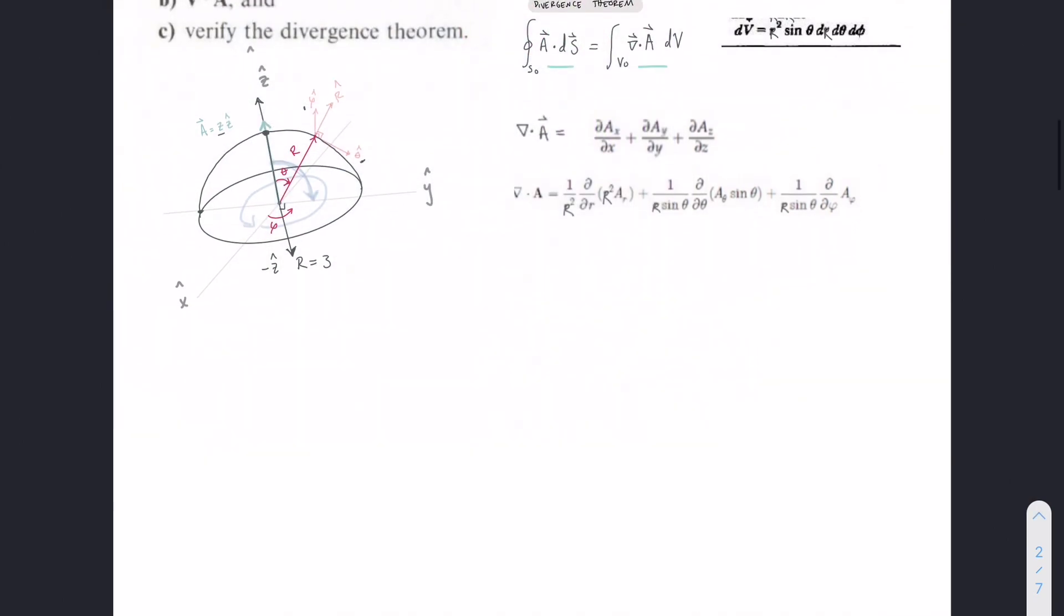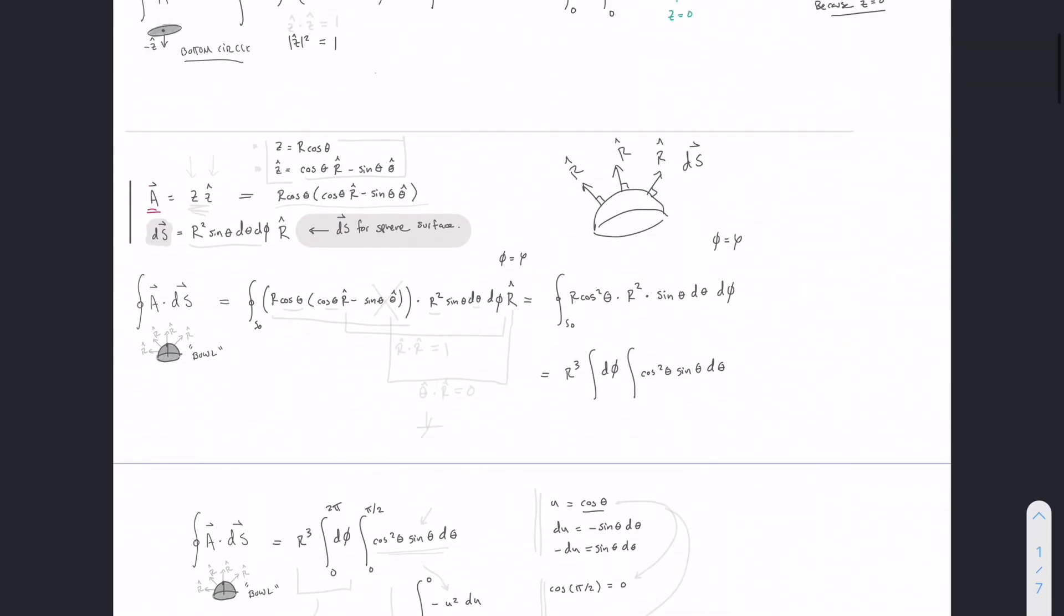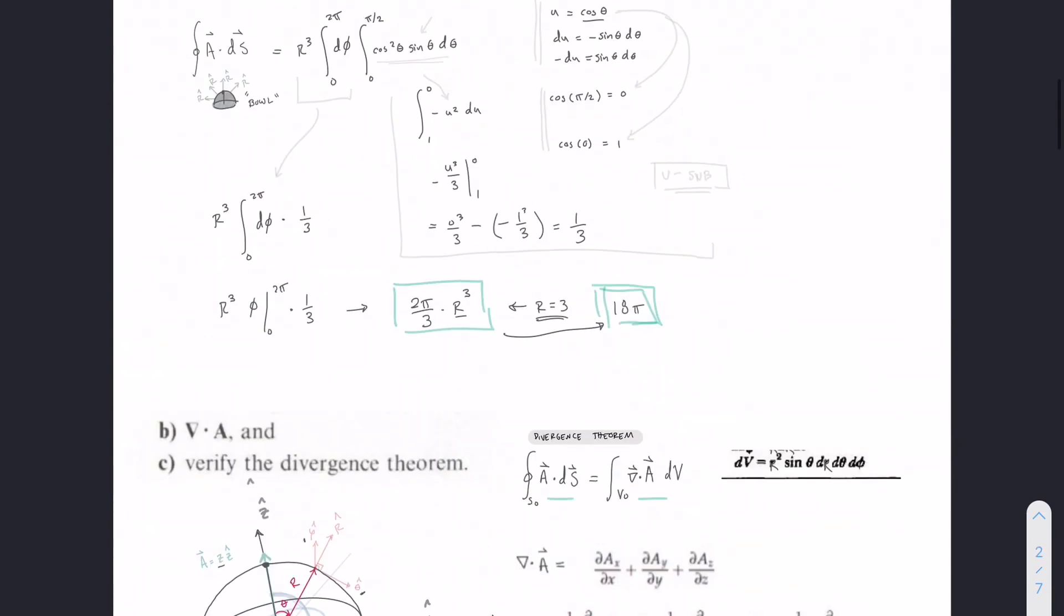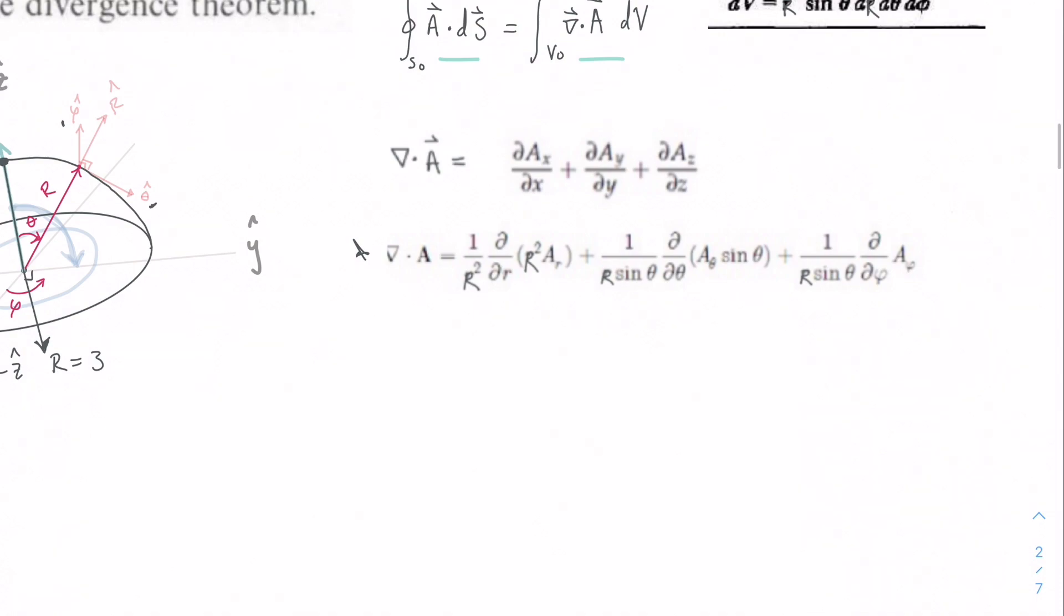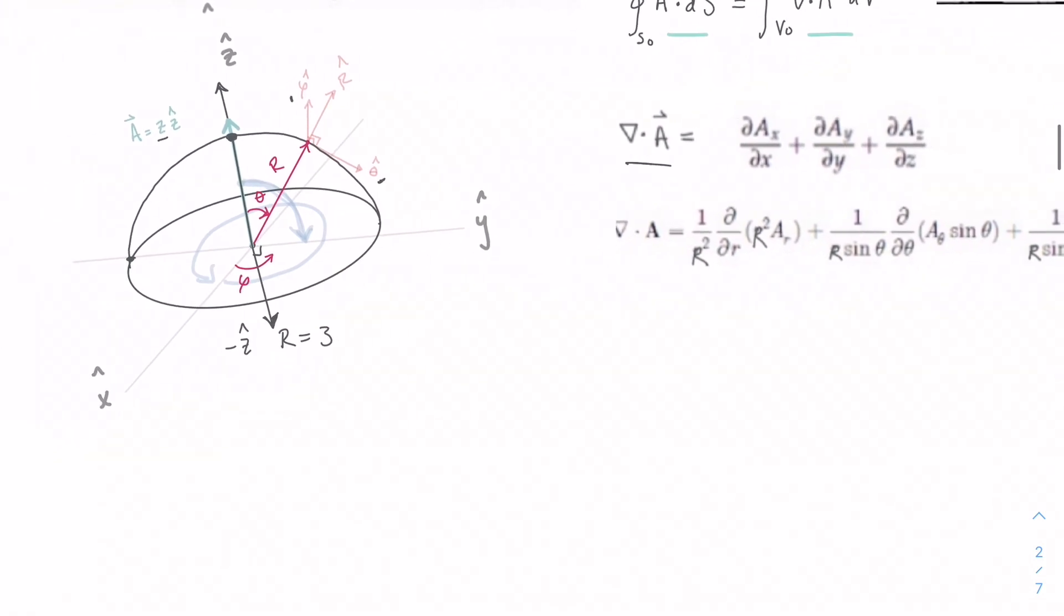So for the right side, the first operation that we're going to do is this gradient dot A. So we have two options. Up here, we converted our A into its spherical form. And so we could take this piece here with an r hat and a phi hat piece, or we can use the original form.